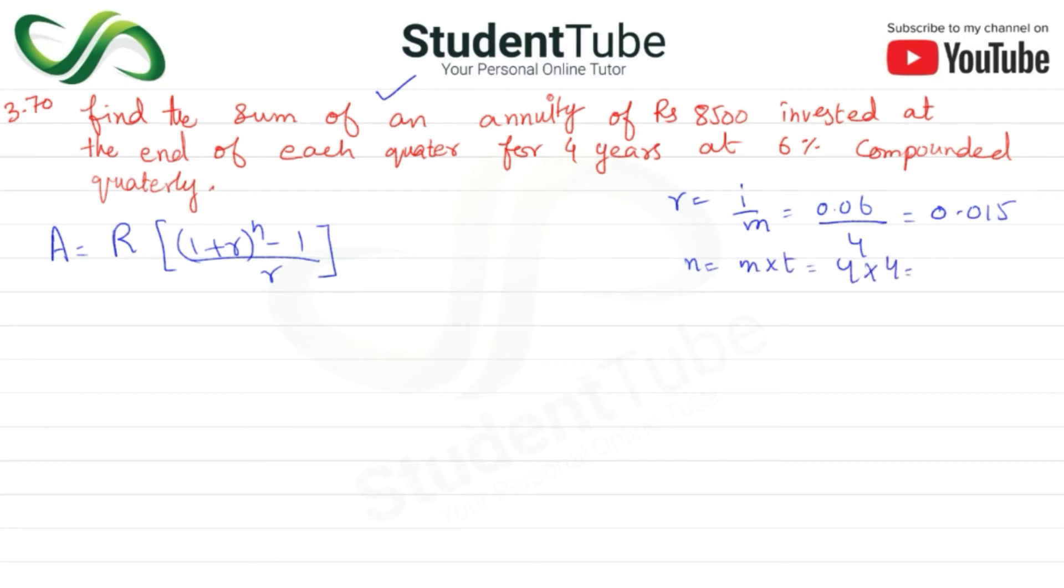4 times 4 is 16. So we have 8500[(1 + 0.015)^16 - 1]/0.015.